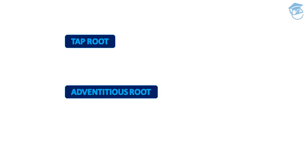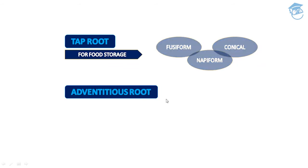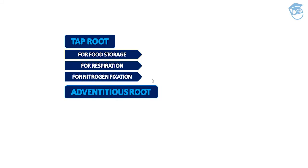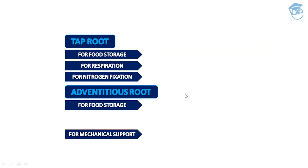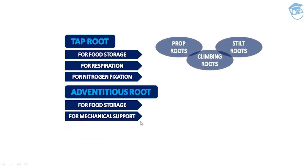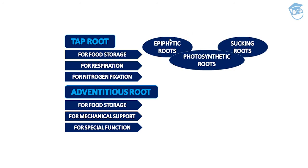Now let's talk about the modifications of roots. First is tap root — for food storage. For mechanical support and for special functions — and second is adventitious root — for food storage such as simple tuberous root and fasciculated roots; for mechanical support such as prop roots, climbing roots, and stilt roots; and for special functions like epiphytic roots, photosynthetic roots, and sucking roots.